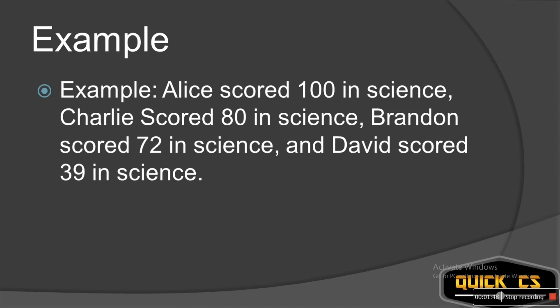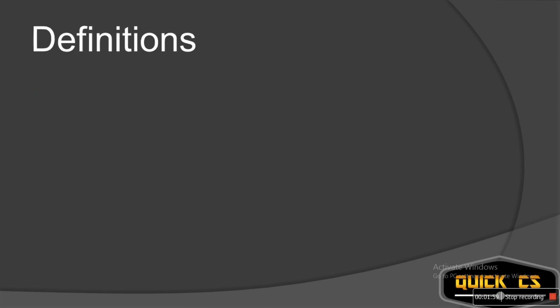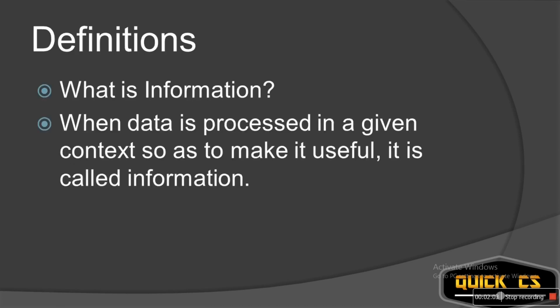Now, is this data organized in any order — say alphabetically? No, it is not. It is just raw facts. You might use data and information interchangeably in real life, but these are two completely different things. Information is what you get when data is processed in a given context — when you have a purpose and intention to process the data to get a desired result.